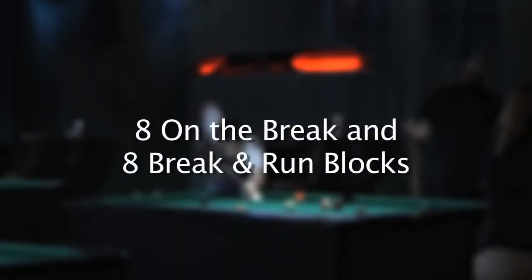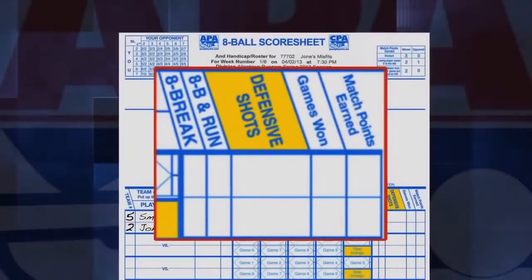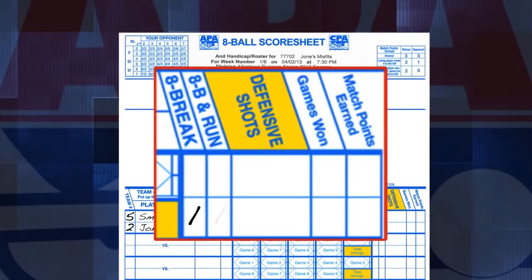Use the appropriate blocks to mark the total eight balls pocketed on the break, eight break, and the total of all break and runs, eight break and run, for each player in the appropriate blocks here.